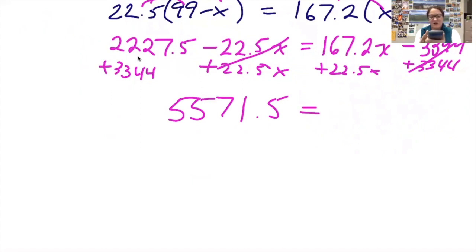167.2 plus 22.5 gives me 189.7 x. Now I'm going to divide both sides by 189.7.